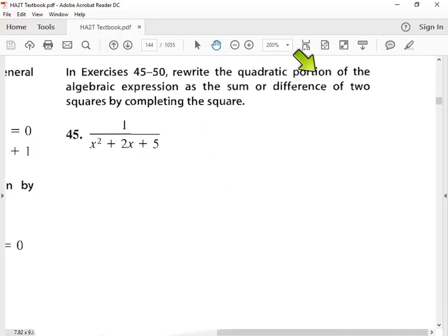Okay, this says rewrite the quadratic portion of the algebraic expression. So I see a big algebraic expression, the denominator right here is the algebraic portion, and we're supposed to write it as a sum or difference of two squares by completing the square.